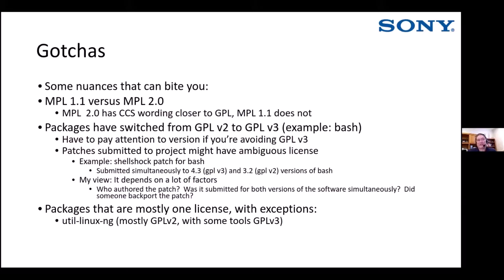Another example: it's not trivial to figure out the license for all outputs from a package. In util-linux-ng, it's mostly GPLv2, and the COPYING file at the top of the source directory says GPLv2. But you have to look at the headers on individual files, because there are a couple of files that are actually GPLv3. You have to pay close attention and look carefully at this stuff to make sure you don't get caught.